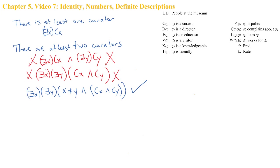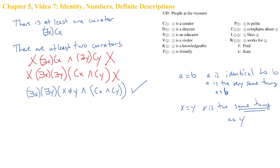Now let me say something briefly about this identity predicate. We use the equal sign, just as you're accustomed to in mathematics, to indicate that the objects denoted by the symbols on either side of the identity sign are one and the same object — they're numerically identical. So if we write a = b, we have 'a is identical to b,' or 'a is the same thing as b.' We can use the identity predicate with variables, as we did on the left-hand side: x is the same thing as y. And we can negate the identity sign just by slashing it, giving us a ≠ b, x ≠ y, and a ≠ x.